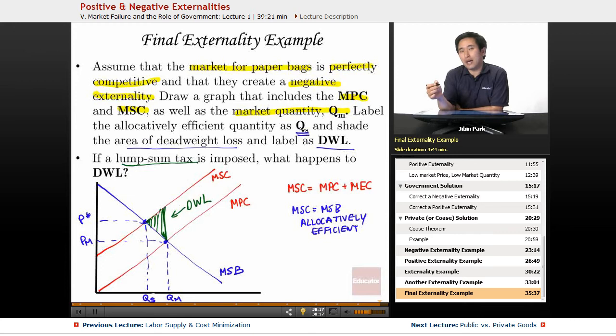Whereas a lump sum tax does not affect the marginal cost. A lump sum tax does not affect production. So most questions that ask about lump sum and ask how that's going to change your production - generally the answer is not going to be anything at all.